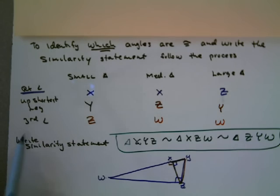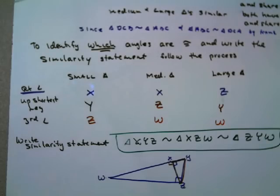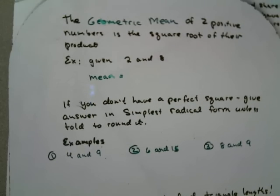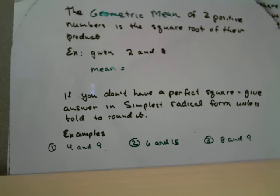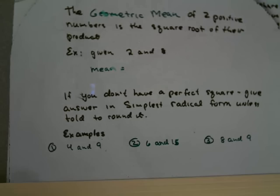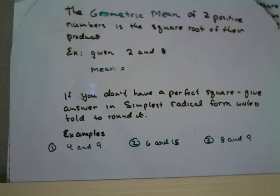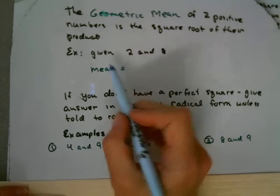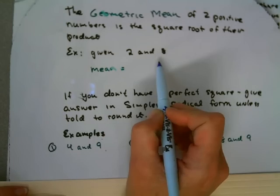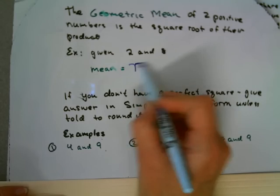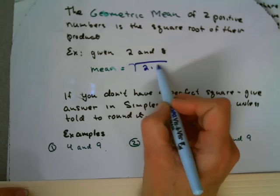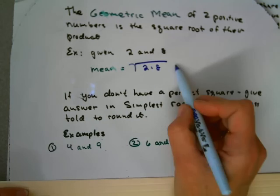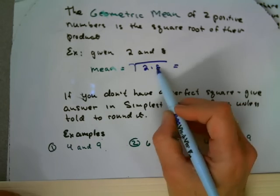And the next thing we're going to talk about in this video is, what is a geometric mean? And a geometric mean is simply the geometric mean of two positive numbers is the square root of their product. Now that's a mouthful. But it's the easiest thing going. All you do is, if you're given two numbers, say 2 and 8, the mean is the square root of their product. Product means multiply. So the square root of 2 times 8. So all I'll do is I'll simplify that. And I have to multiply before I take the square root. 2 times 8 is 16. And the square root of 16 is 4. Found the mean. That's all we're doing.